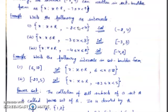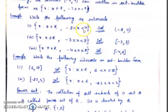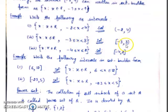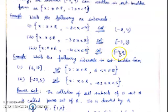Now consider another example: write the following in interval form. First, −2 < X < 4 — strict inequality on both sides, so this is the open interval (−2, 4). Second, −3 ≤ X < 3 — minus 3 is closed and 3 is open, giving the semi-open interval [−3, 3). Third, −4 ≤ X ≤ 2 — equality on both sides, so this is the closed interval [−4, 2].